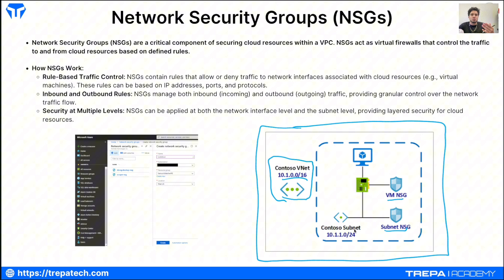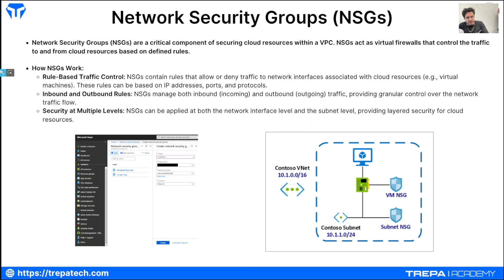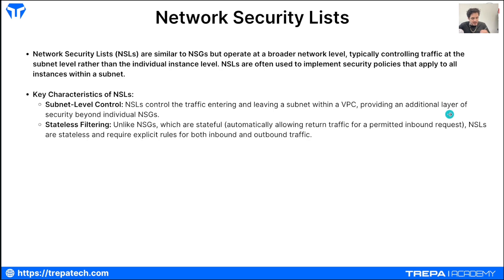NSGs have inbound and outbound rules and control the flow to and from resources at Layer 3, 4, or even Layer 7. In Azure, NSGs operate at Layer 3 and 4, while application security groups handle Layer 7. Network security lists are similar to NSGs but operate at a broader network level, typically controlling traffic at the subnet level rather than the individual instance level.